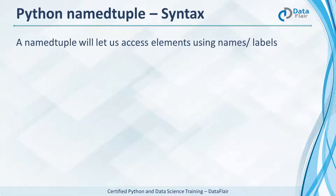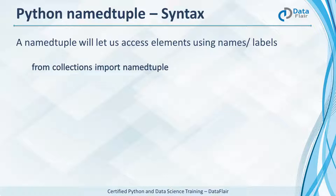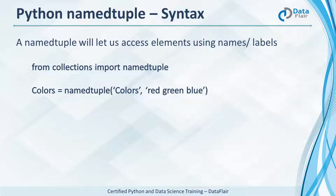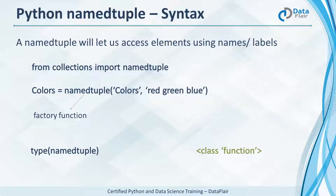Tuples let us access items using indices. Named tuples let us access them using names. Let's import it from the collections module. Colors is a named tuple where named tuple is a factory function that gives us a named tuple object. Colors is the name of the tuple and we have a string of fields red, green, blue.